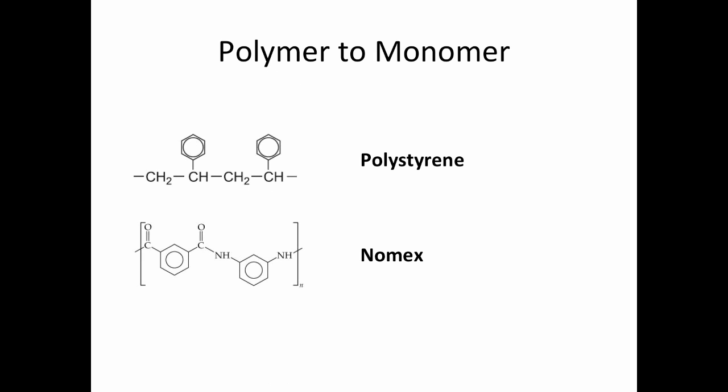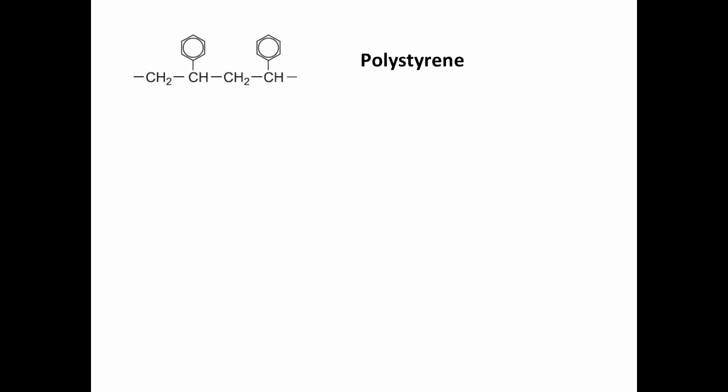So if we have a look at our two polymers first, polystyrene and Nomex. Let's take a look at polystyrene. So polystyrene, here we can see that we have this repeating unit. And if we have a look, there aren't any particular carboxylic acid groups, aren't any nitrogens.